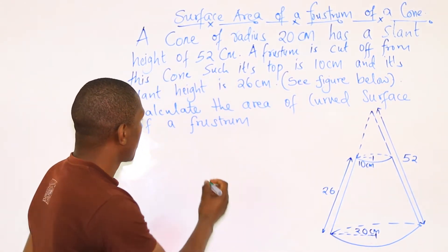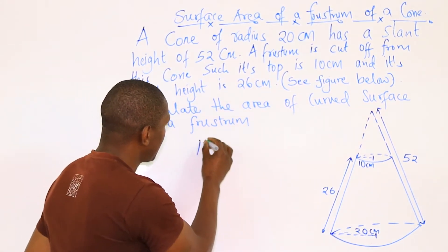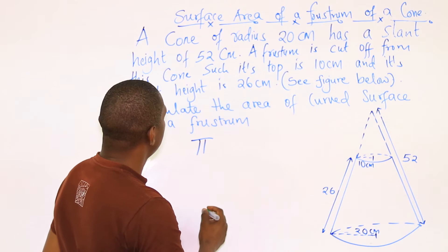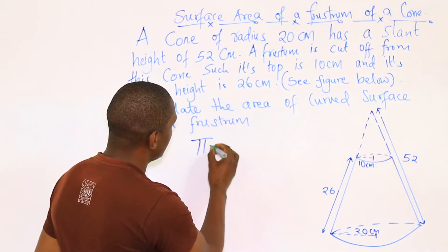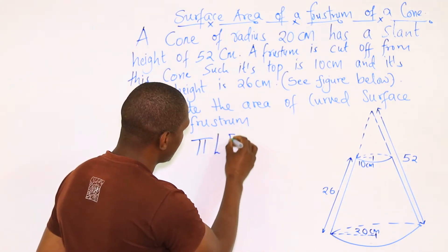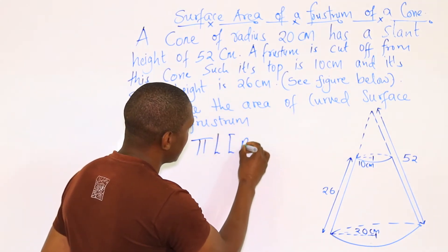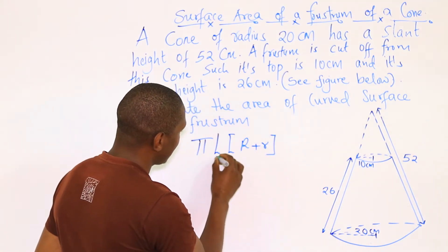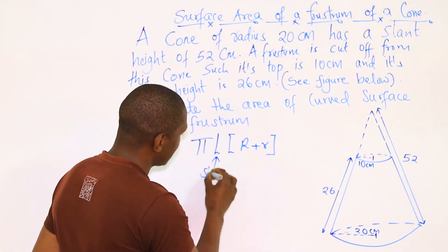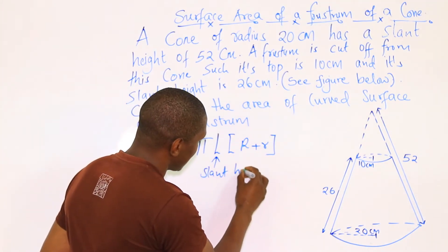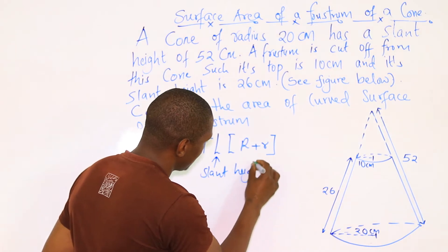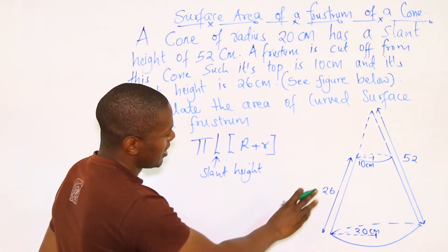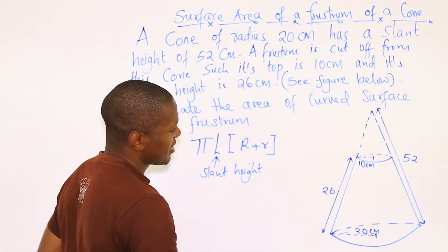Alternatively, we can use this formula to find the curved surface area of the frustum, that is π l (R + r), where l is the slant height. When you're using this formula, you just need to consider the frustum only.